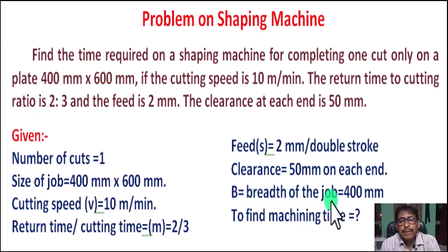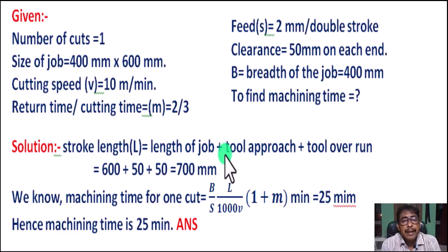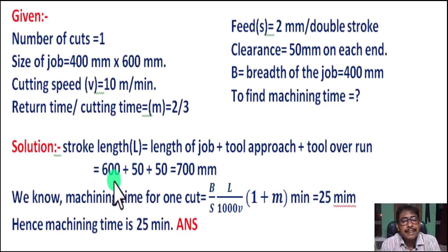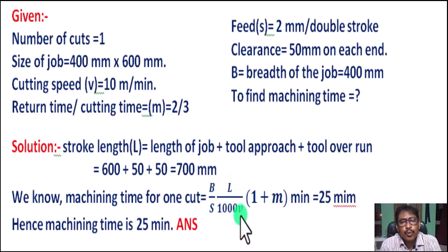Width of the job B equals 400 millimeter. Now we solve the problem. Total stroke length L equals the length of the job plus tool approach gap plus tool overrun gap. So L equals 600 millimeter plus 50 millimeter plus 50 millimeter, which equals 700 millimeter. The machining time formula for one cut is: T = (B / S) × (L / (1000 × V)) × (1 + M) minutes.